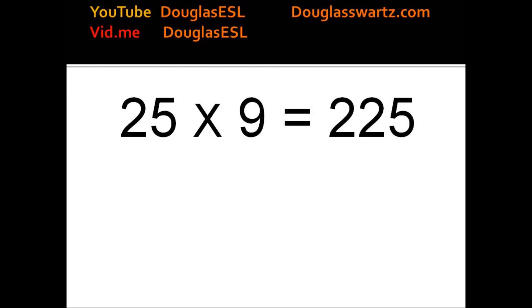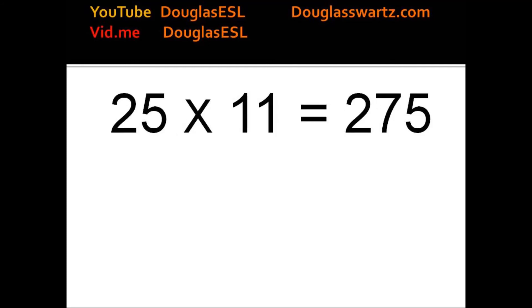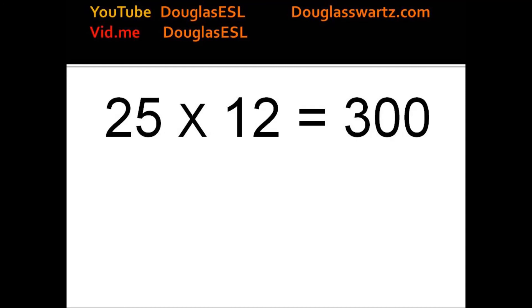25 times 9 equals 225. 25 times 10 equals 250. 25 times 11 equals 275. 25 times 12 equals 300.